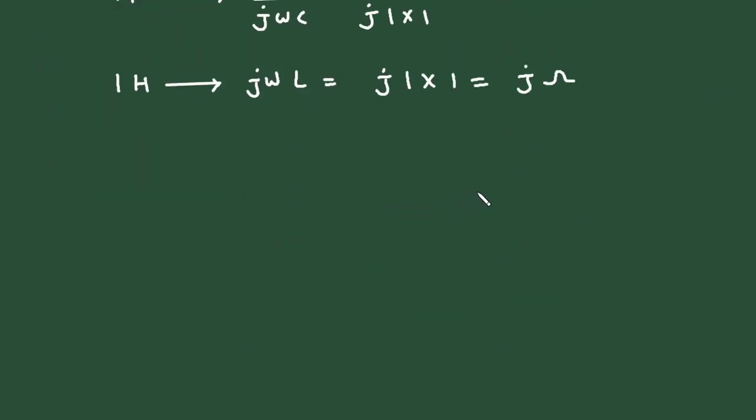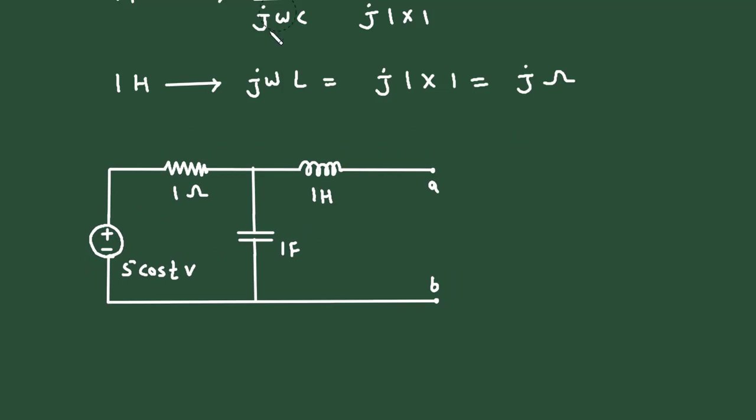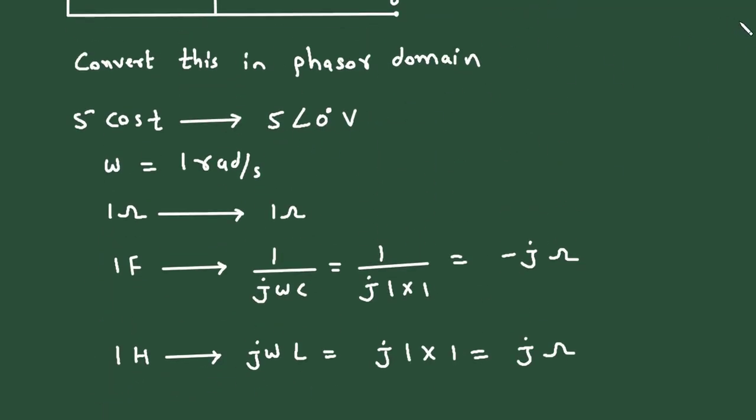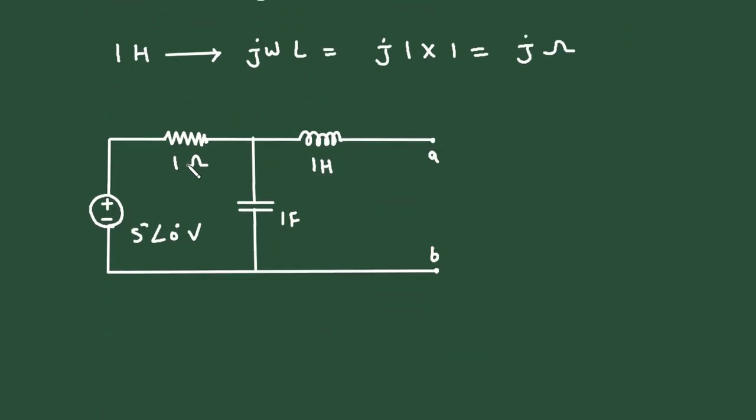Now we got all the values. So now this 5 cos t will change to 5 at an angle 0 degree volt. Then this 1 ohm will remain same.